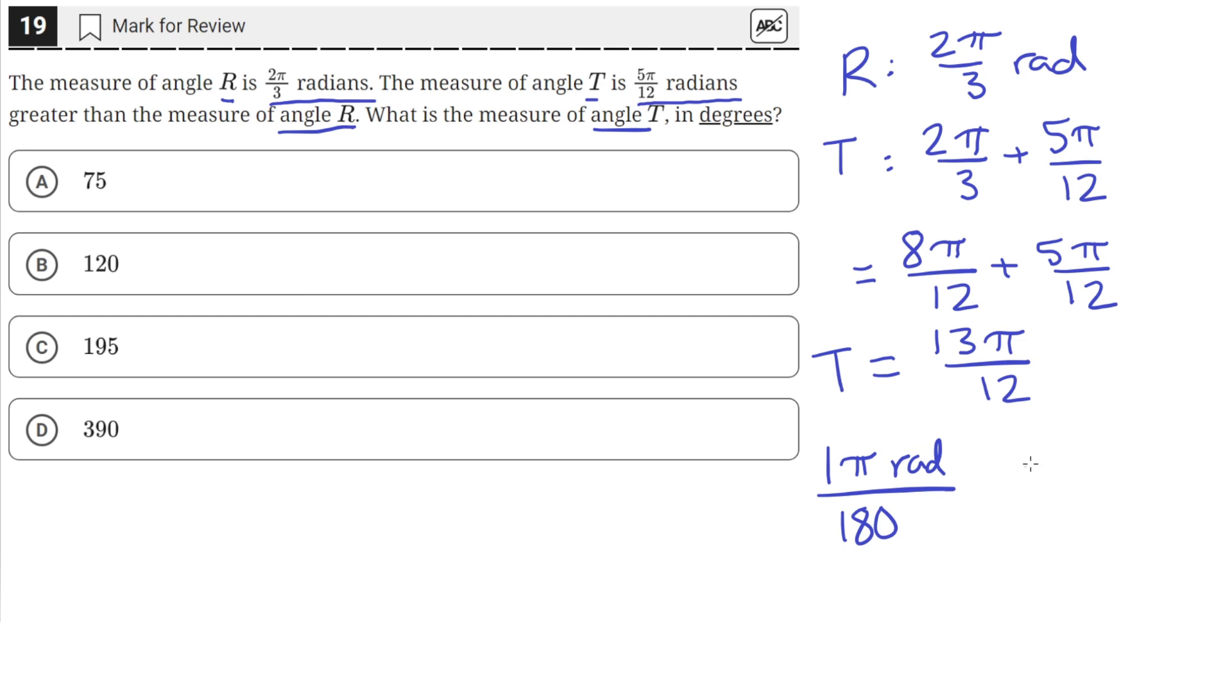So we multiply 13π/12 radians by 180 degrees per π radian, and then we'll cancel out the π radians since this had a unit of radians.